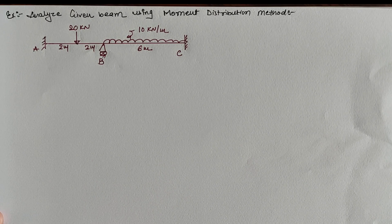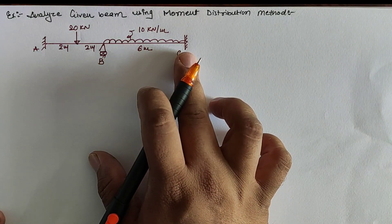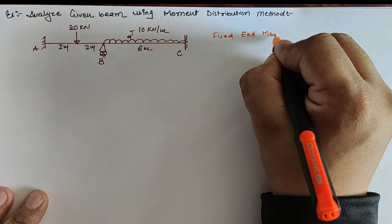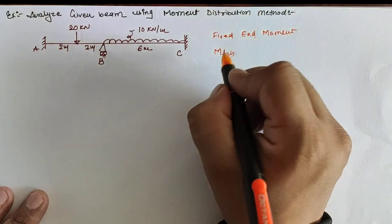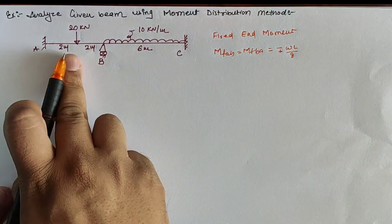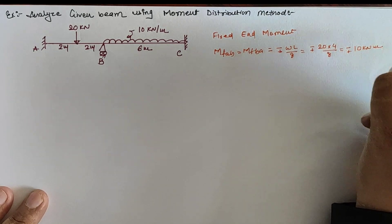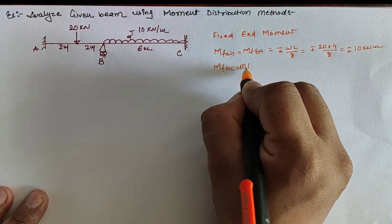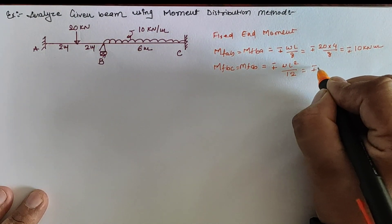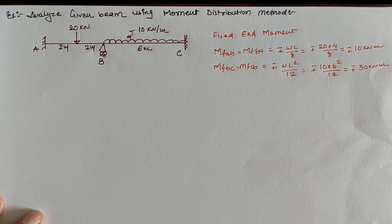Hello friends, today we are going to learn the Moment Distribution Method for a given two-span continuous beam having the end joint as a fixed support and intermediate joint as a roller support. The first step is to calculate the fixed end moments. For span AB, MF-AB and MF-BA are calculated as negative/positive w·L/8 for a central point load, which gives 10 kilo-Newton-meter. For span BC, due to UDL it is w·L²/12, which gives negative/positive 30 kilo-Newton-meter.